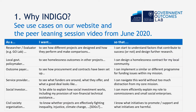So why Indigo? Initially as researchers, we wanted to see how different projects are designed and how they perform, and make comparisons, so that we could start to understand factors that contribute to the success or not of these projects. As a school of government, we also saw use cases for policy makers. For example, a local government policy maker may want to see homelessness outcomes in other projects so that they can design a homelessness contract for their local community. Please explore these and other use cases on our website and in the Peer Learning Session video from June 2020.